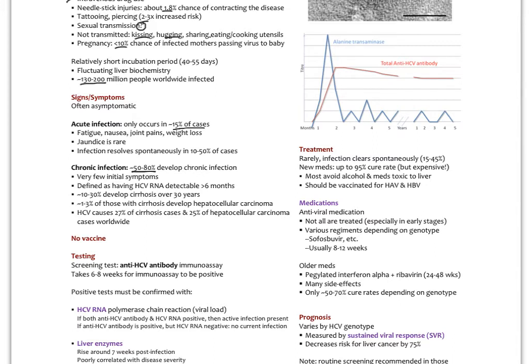By definition, having the hepatitis C RNA for more than six months is a chronic infection. About 10 to 30% of those patients develop cirrhosis over 30 years. That's a high number. About one to three percent of those with cirrhosis develop hepatocellular carcinoma.